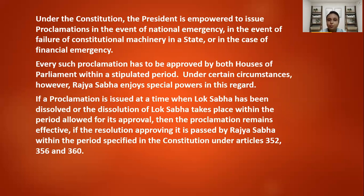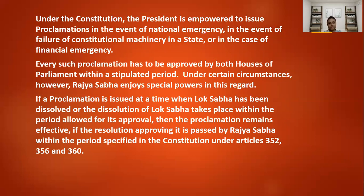Under the constitution, the president is empowered to issue proclamations in the event of national emergency. In case of national emergency, the president is the only person who can declare it, issue proclamations, and take necessary decisions. Emergencies are of three types: financial emergency, national emergency during times of war, and constitutional machinery failure. In all three types, the president is the ultimate deciding person. Every such proclamation has to be approved by both houses of parliament within a stipulated period of two months.